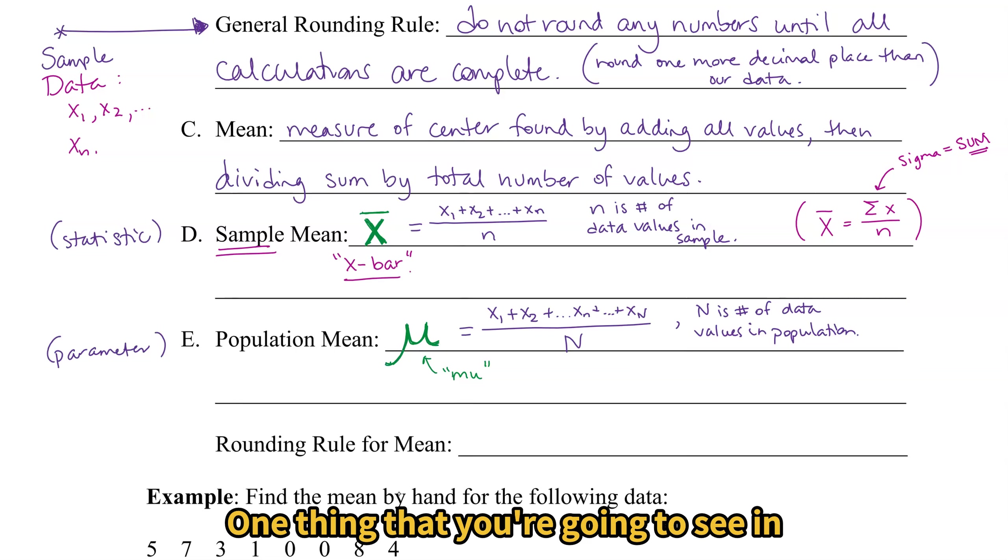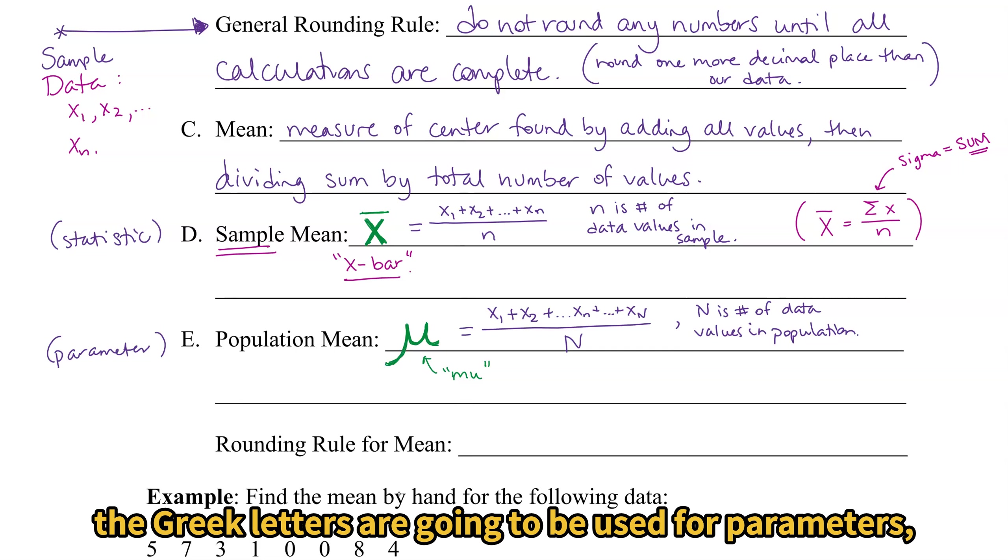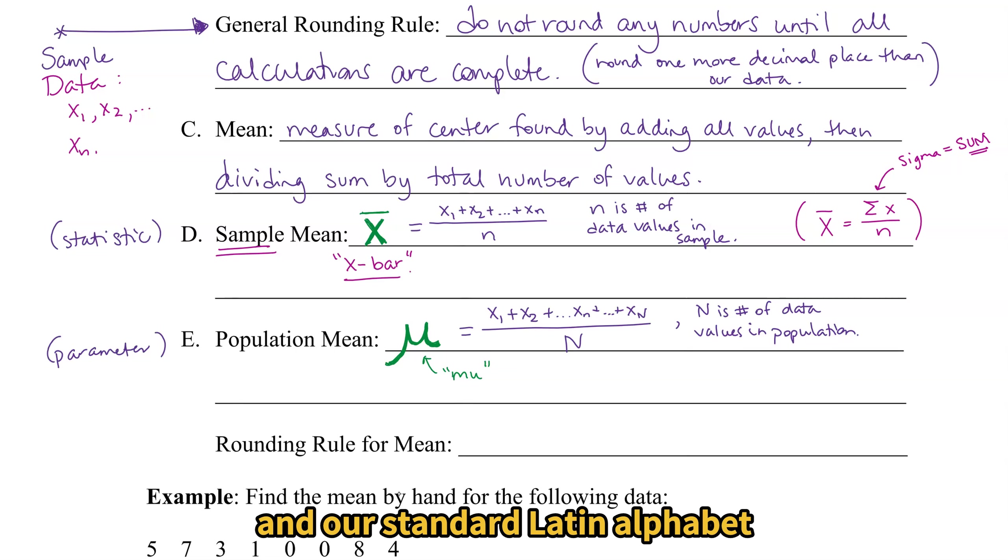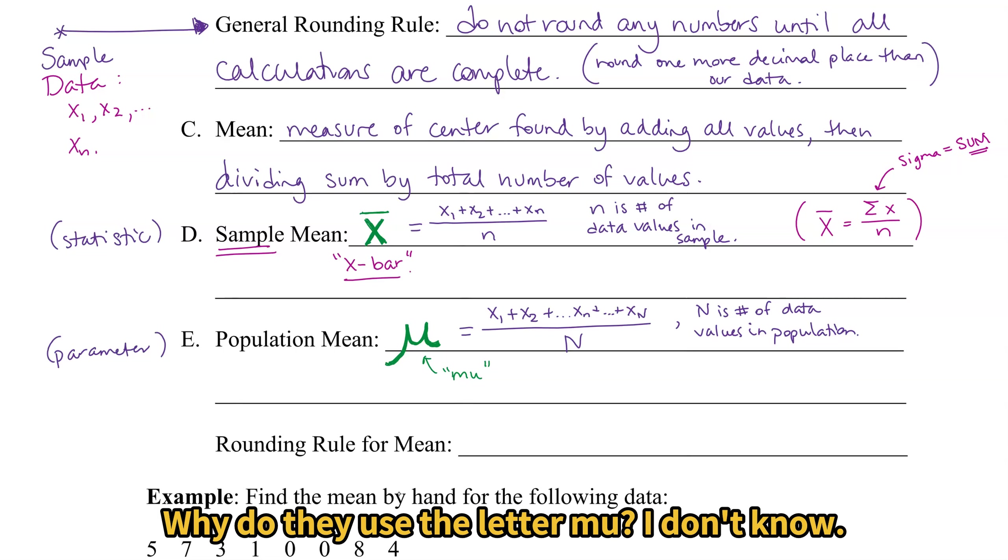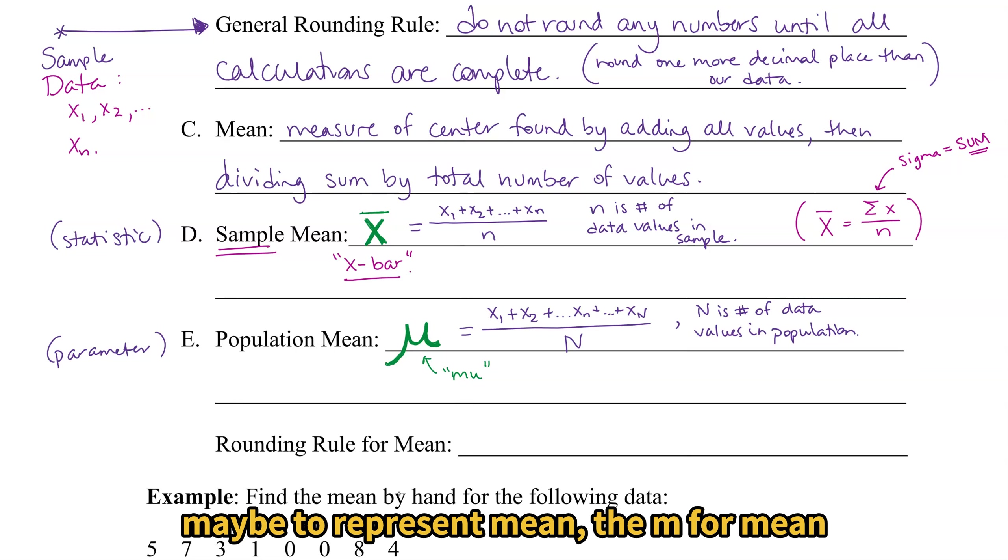One thing that you're going to see in this chapter is that the Greek letters are going to be used for parameters. And our standard Latin alphabet will be used for statistics. Why do they use the letter mu? I don't know, maybe to represent mean. So the M for mean, possibly.